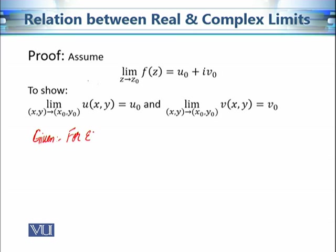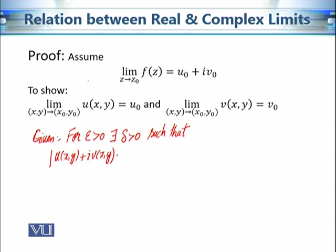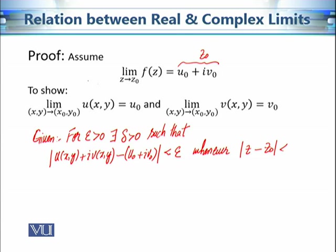For epsilon greater than 0, there exists delta greater than 0 such that |u(x,y) + i·v(x,y) − (u₀ + i·v₀)| is less than epsilon, whenever |z − z₀| is less than delta and greater than 0. This is the given statement — for every epsilon we can find a delta.